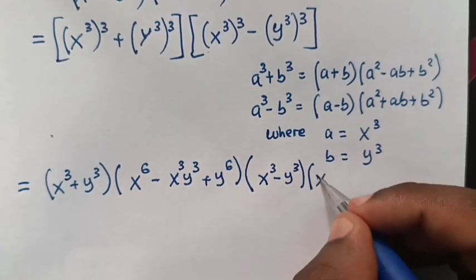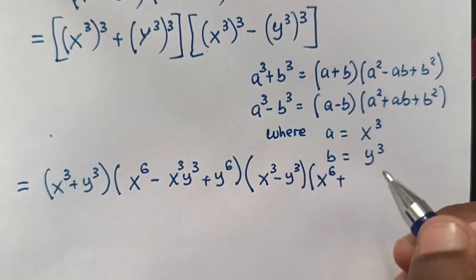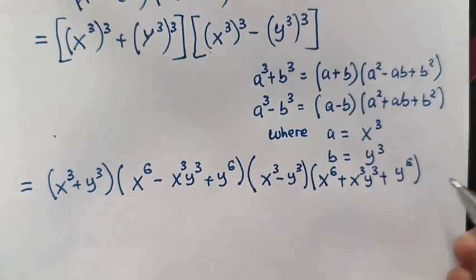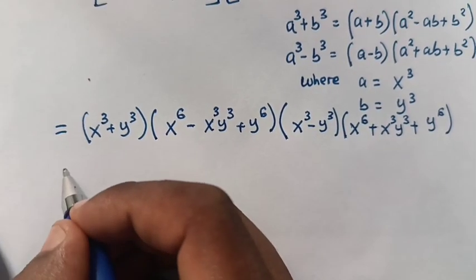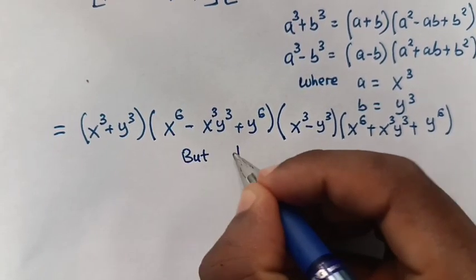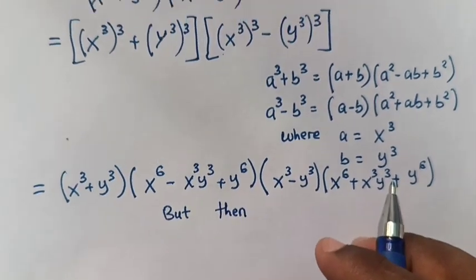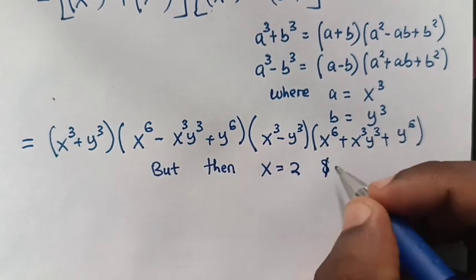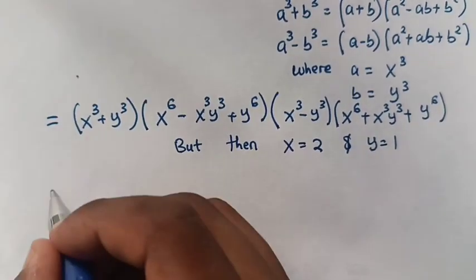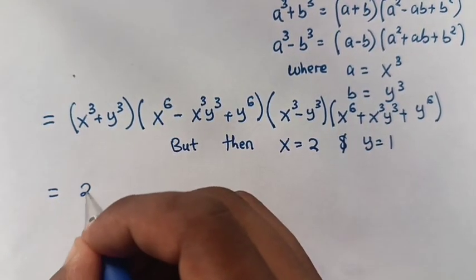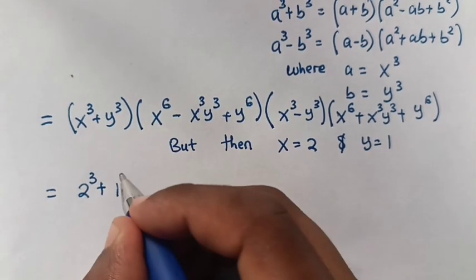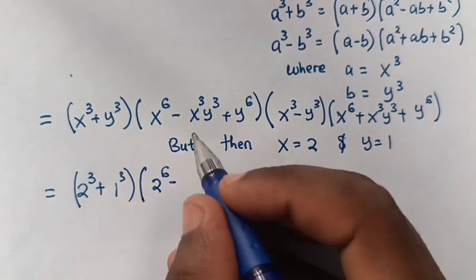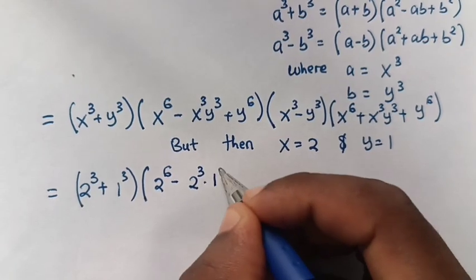For the second part (a cubed minus b cubed), we get x power 6 plus x power 3 y power 3 plus y power 6. Now recall that we let x equal to 2 and y equal to 1, so we substitute these values into the equation. x power 3 becomes 2 power 3 and y power 3 becomes 1 power 3.